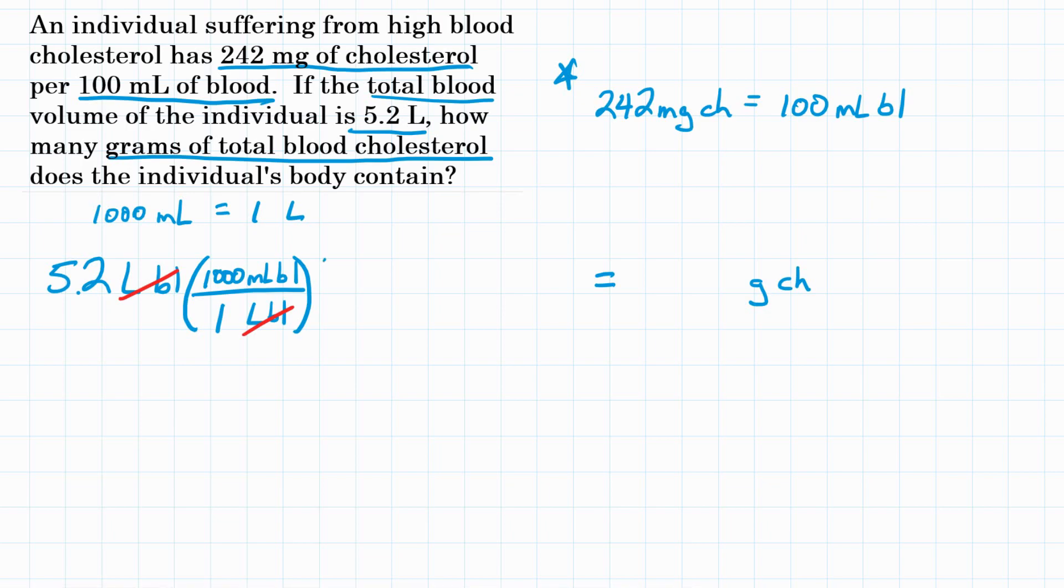So the next step, next conversion factor, we can use again what the problem gave us: 242 milligrams of cholesterol per 100 milliliters of blood. So if milliliters of blood is put on the bottom, we can get rid of that and convert to milligrams of cholesterol. And then for 100 milliliters of blood, that's 242 milligrams. Again, we got that from the problem. Now our milliliters of blood cancel out and we're at milligrams of cholesterol.